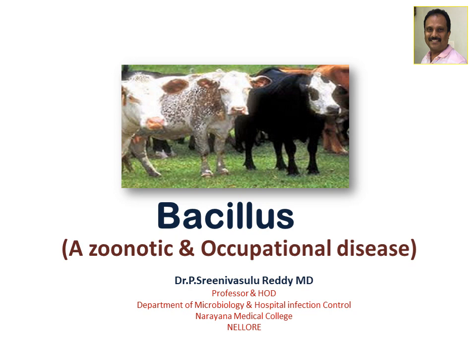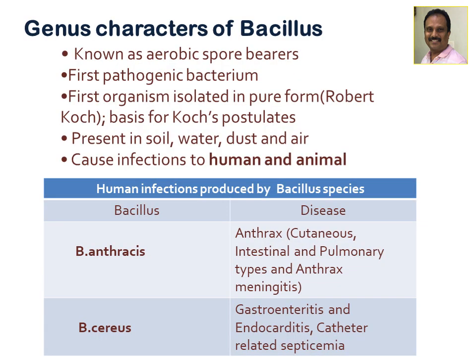Today I am going to talk about the genus Bacillus, which is a zoonotic disease and also an occupational disease, because people engaged with certain types of occupations may suffer from this disease. The general characteristics of this Bacillus: it is known as an aerobic spore bearer and is the first pathogenic bacterium.